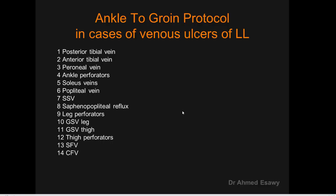The ankle-to-groin protocol is used in cases of venous ulcer of the lower limb. We start from below at the ankle: posterior tibial vein, anterior tibial vein, peroneal vein, ankle perforators, soleus veins, popliteal vein, short saphenous vein, saphenopopliteal reflux, leg perforators, great saphenous vein leg, great saphenous vein thigh, thigh perforators, superficial femoral vein, and common femoral vein. We start with ankle vasculature because the most common cause of venous ulcers is ankle perforators incompetence.